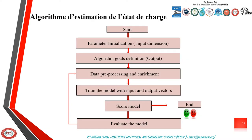This figure shows us an algorithm to estimate the state of charge. First, we must define the objective of the algorithm and then initialize the input vectors. Next, we train the model with the input and output vectors. Then we calculate the root mean square error, and if it is high, we will pre-process and enrich the information, then look to train the model again to decrease the error.